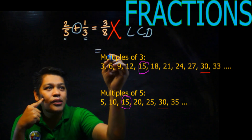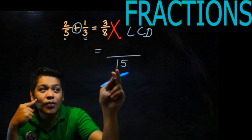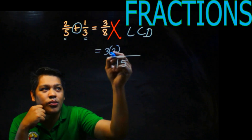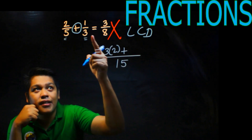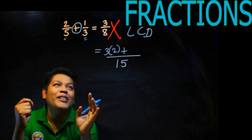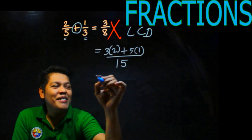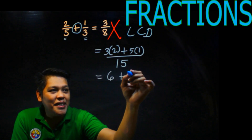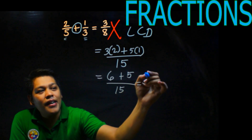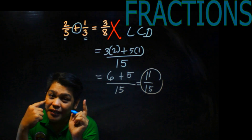So 15 is your LCD. Divide 15 by the denominator of the first fraction: 15 ÷ 5 = 3, then multiply by the numerator: 3 times 2 is 6. Copy the addition sign. Then 15 ÷ 3 = 5, times 1 is 5. So we have 6 plus 5 over 15, which is 11 over 15. That is very far from 3 over 8.